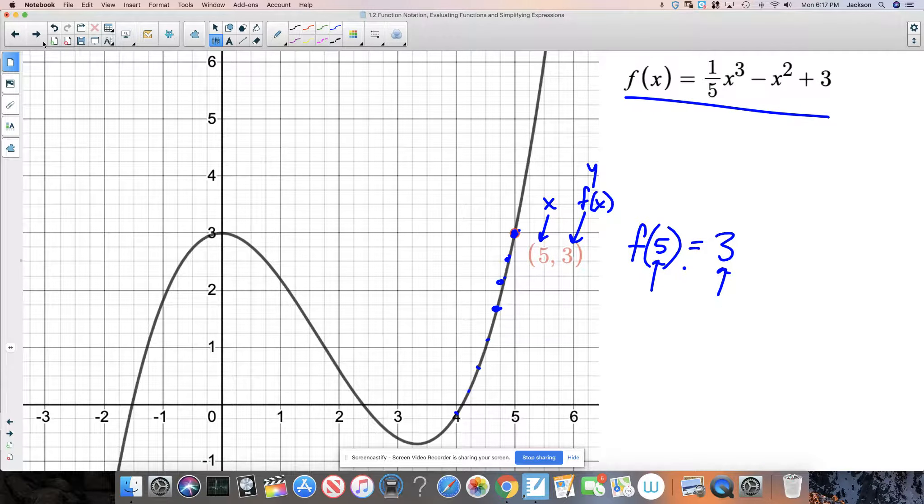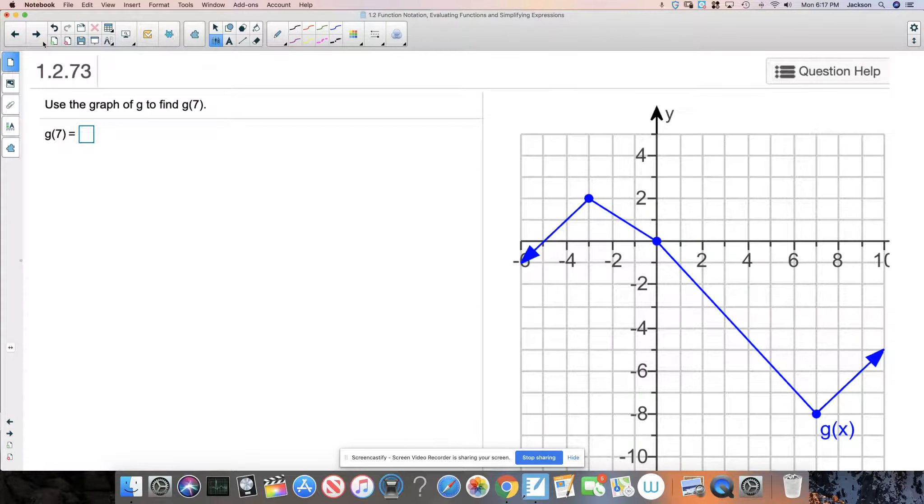The reason I'm showing you this one more time is for problems like this that you're going to get on the math Excel. So this problem says use the graph of G to find G of seven. This is always the input. That's our X coordinate.